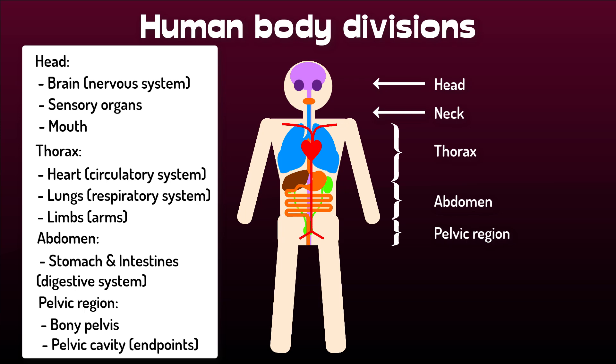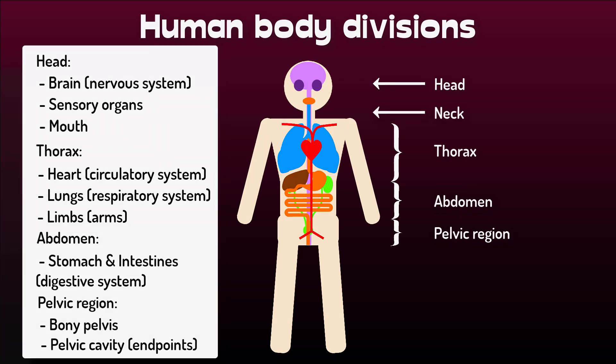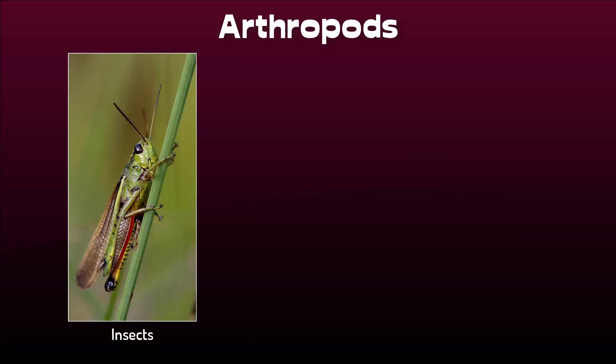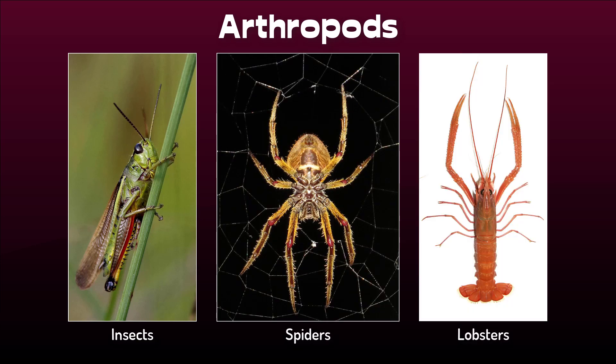But is there any reason that these body divisions have to be arranged in this particular order, or that each division should contain the particular groups of organs that they do in humans? Let's look at some other highly evolved groups. Arthropods like insects, spiders, and lobsters, for instance, have somewhat different body divisions.